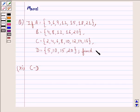and D equals to the set {5, 10, 15, 20}, then find the 11th part that is C minus D. So, let us see the solution to this one.